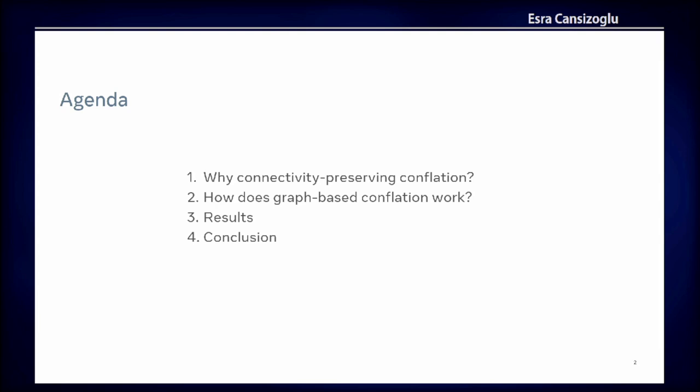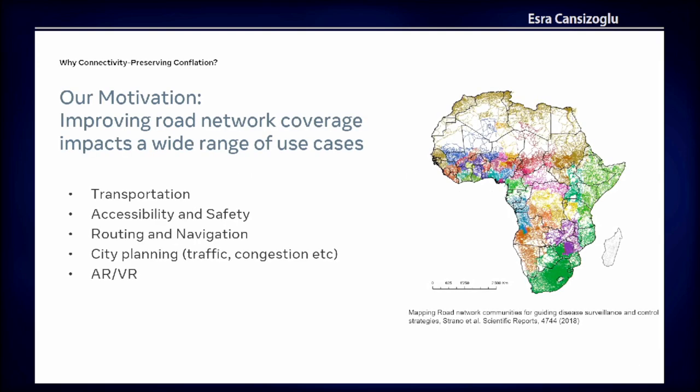Our major motivation in this work is improving road network coverage, and this impacts a wide range of use cases — from transportation accessibility, routing and navigation, as indicated in the previous talk, to city planning, traffic and congestion prediction. All these relate to good road network coverage. Recently there are also a lot of augmented reality and virtual reality use cases which require good comprehensive coverage of the city.